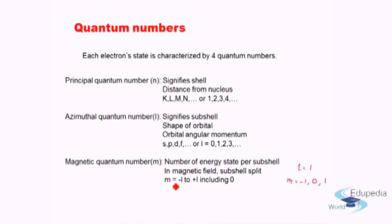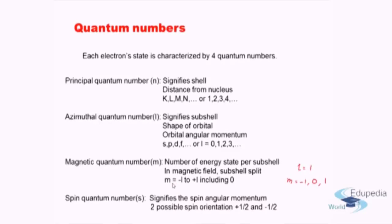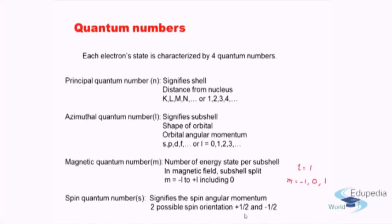The fourth quantum number is the spin quantum number, represented by a small s. Within a particular magnetic quantum number, an electron can have two possible states: it can spin with a plus one-half spin or a minus one-half spin. So the spin quantum number can have only two possible spin orientations — either plus half or minus half — and it signifies the spin angular momentum.